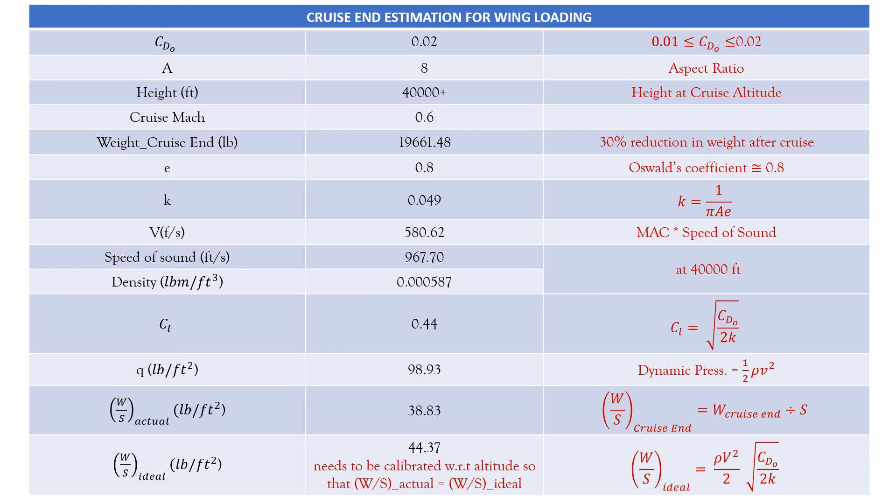Based on cruise start estimation, for the full cruise range, the weight of aircraft decreases by approximately 30%. So this weight is listed under cruise weight. So we have reduced the weight estimated in cruise start by 30% and we have got our weight at cruise end. At the end of the cruise, the actual wing loading is based on the actual weight and wing area, which is denoted by W by S actual.